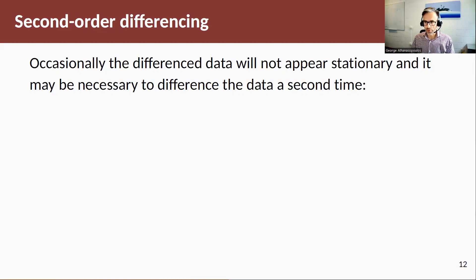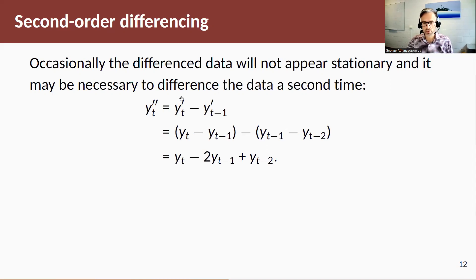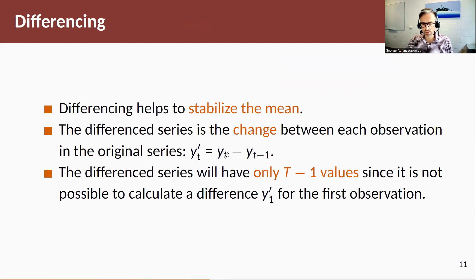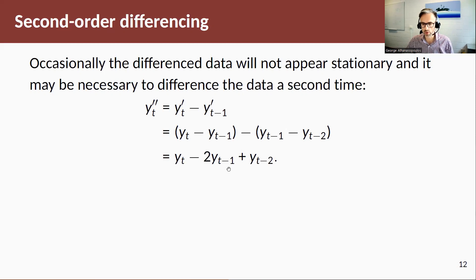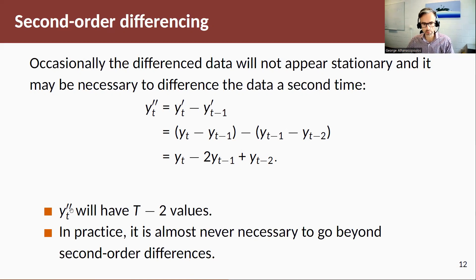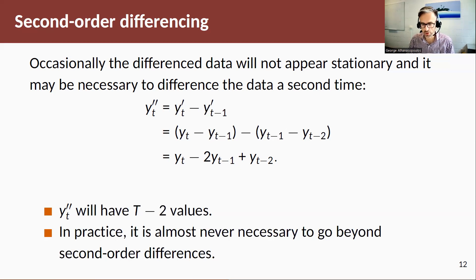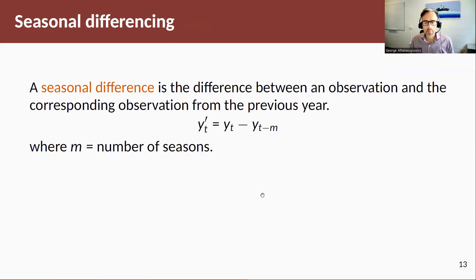Sometimes taking a first-order difference is not enough to stabilize the mean, so we may take a second-order difference. If yt′ = yt − yt−1, then the second-order difference yt″ will have t − 2 values — so the first calculable value is y3″ = y3 − 2y2 + y1. In practice, taking a second-order difference is quite rare, and it is almost never necessary to go beyond second-order differences.